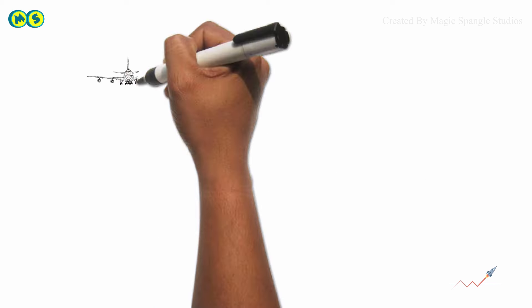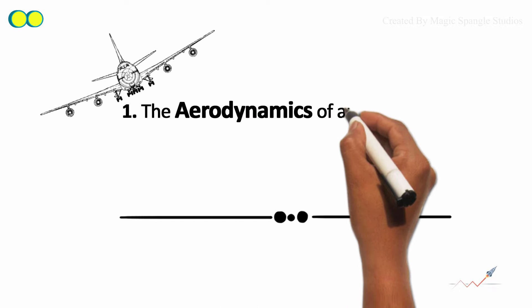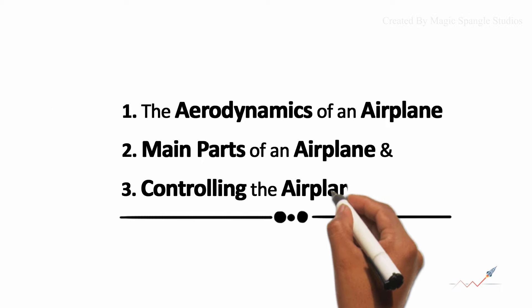Today, we are going to learn how an airplane flies in a very simple way by going through the aerodynamics of an airplane, the main parts of an airplane, and controlling the airplane.